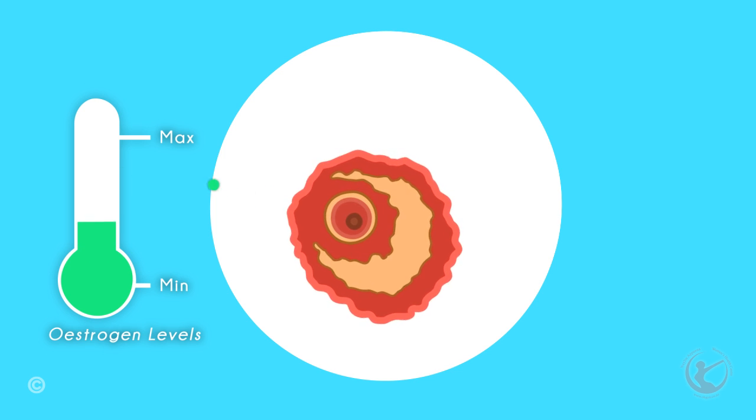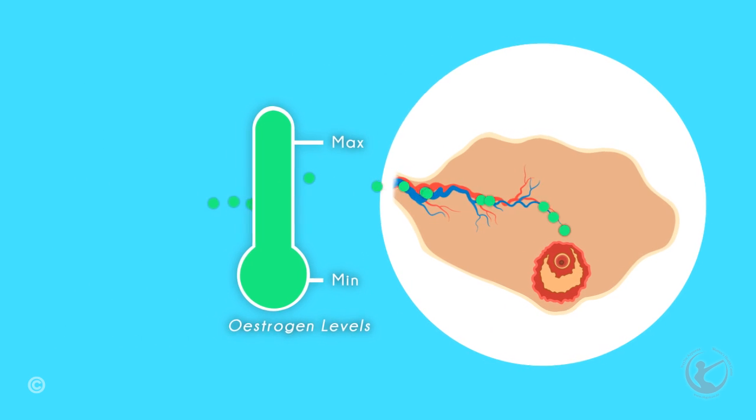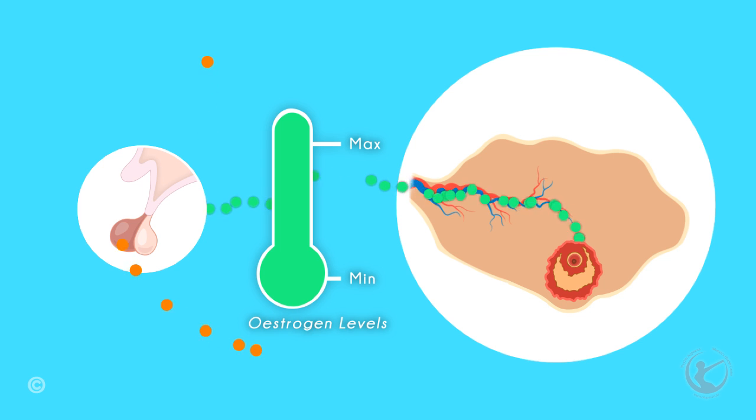When the estrogen reaches a certain peak level and the egg is ready to be released, it triggers the release of luteinizing hormone, or LH, from the anterior pituitary gland, which causes ovulation.